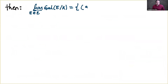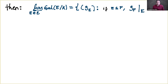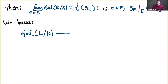We can then consider the projective limit of this system. The projective limit consists of sequences of automorphisms of these groups such that when we restrict a morphism corresponding to E_2 to the subfield E_1, we get exactly the entry that corresponds to E_1.